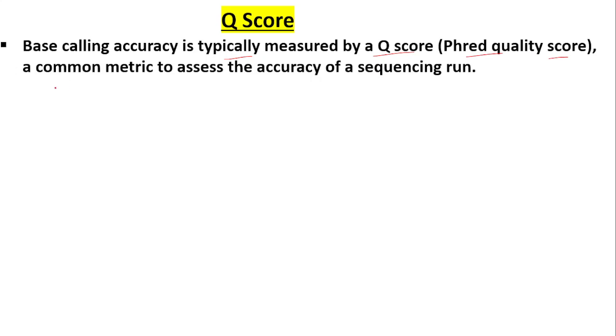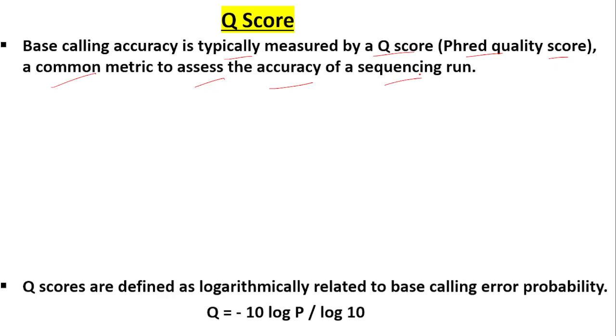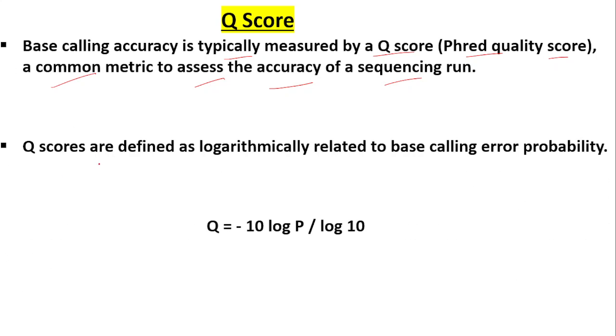This is a common metric that is used to assess the accuracy of a sequencing run. Q scores are defined as logarithmically related to base calling error probability.